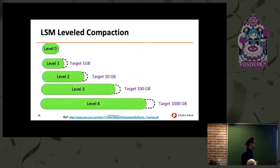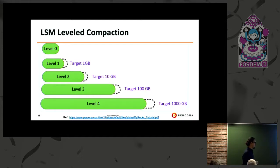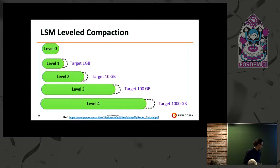The leveled compaction is targeted for different data sizes. As compaction happens it gets larger and larger. Fewer levels is better, but if the data size is big, you have fewer files that are already sorted and merged into different files. There are more details in Yoshinori's tutorial — there's a link, it's a very detailed explanation.